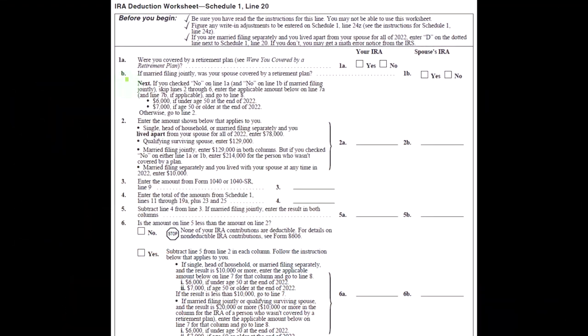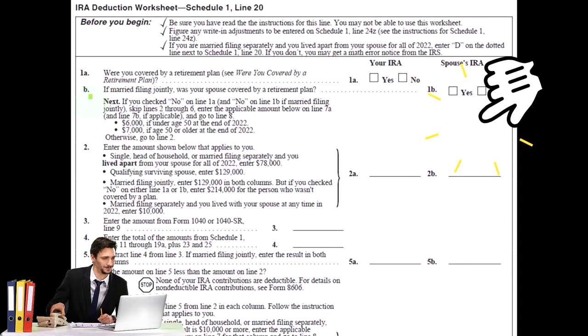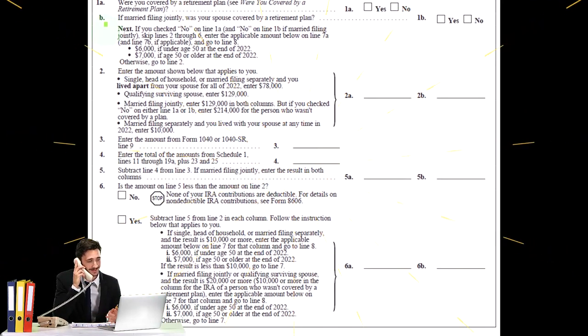Next, if you check no on line 1A and no on line 1B, if married filing jointly, skip lines 2 through 6, enter the applicable amount below on line 7A and line 7B, if applicable, and go to line 8.